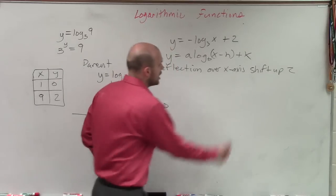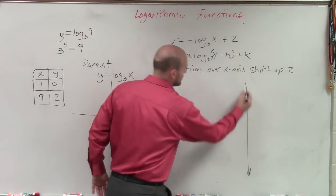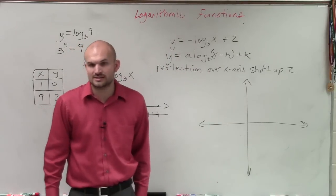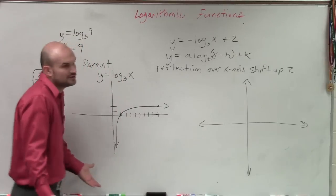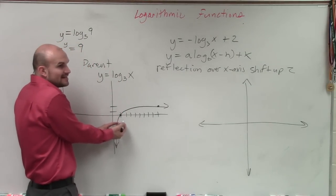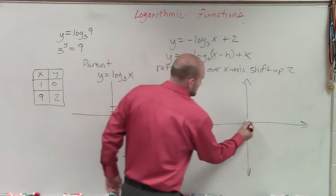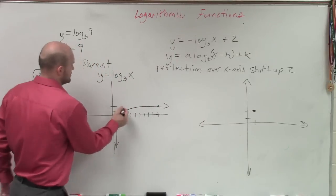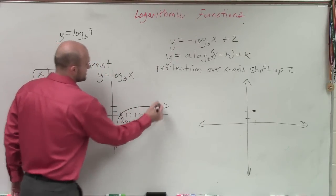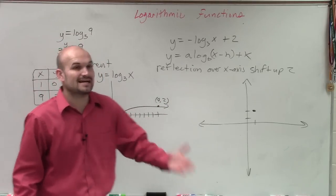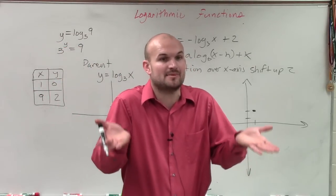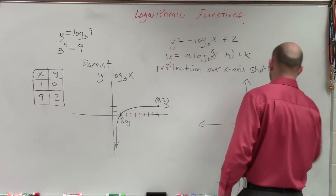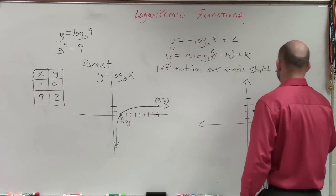So now, our transformations are to reflect over the x-axis and then to shift the graph two units up. So let's do the shifting two units up. Instead of it being at 1, 0, now it's going to be at 1, 2. So this is at 1 comma 0, and this is at 9 comma 2. So instead of the point being at 9 comma 2, now if I shift the graph two units up, it's now at 9 comma 4.